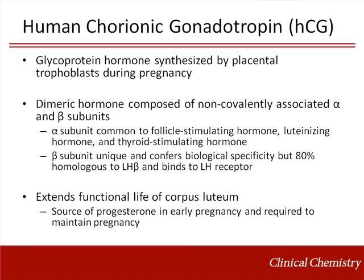The beta subunit of each of these hormones is unique and confers biological specificity. Among the beta subunits, HCG beta and LH beta are very homologous, such that both hormones bind to the LH receptor. The primary function of HCG is to maintain elevated concentrations of progesterone during early pregnancy by extending the functional life of the corpus luteum.